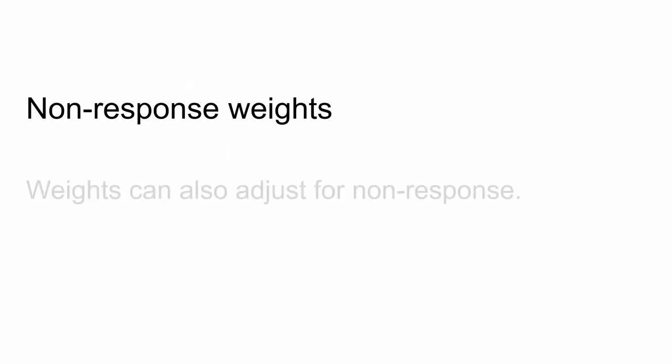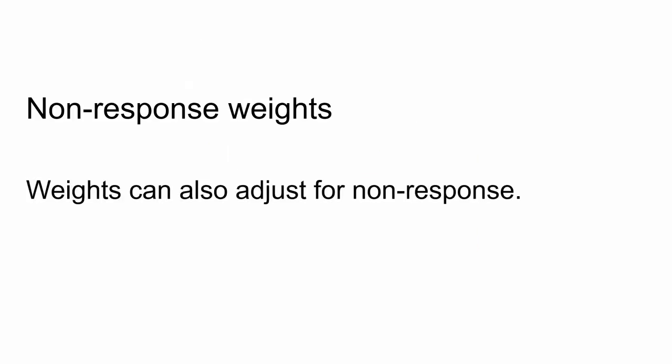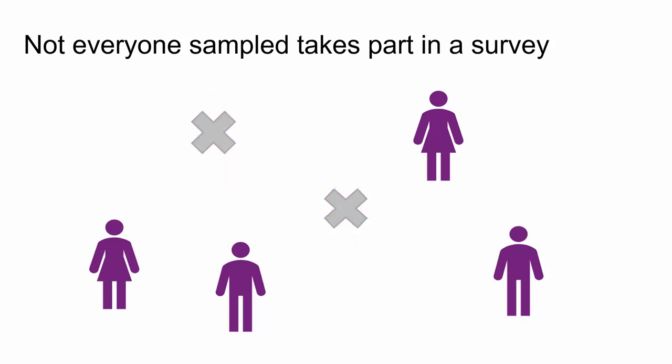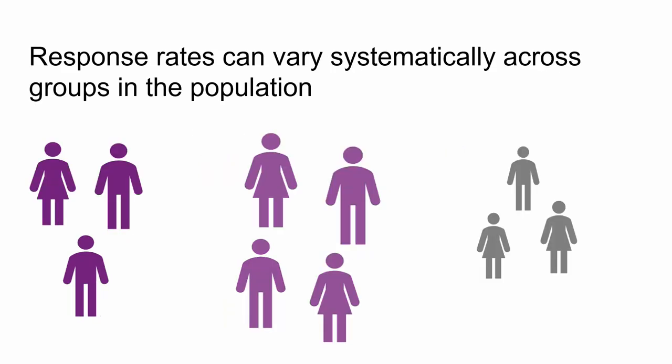Weights can also help to compensate for survey non-response, and these are called non-response weights. Not everyone sampled will take part in the survey. Some people cannot be contacted, and others refuse to take part. Response rates can vary systematically across groups in the population — that is, certain subgroups may be more or less likely to respond to the survey or certain questions in it.